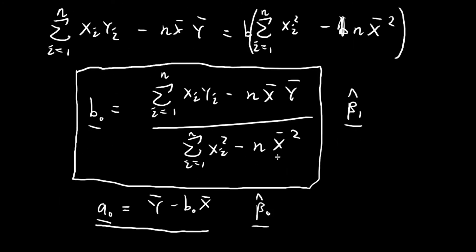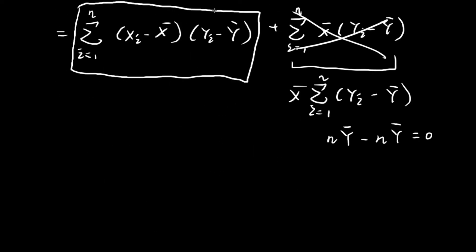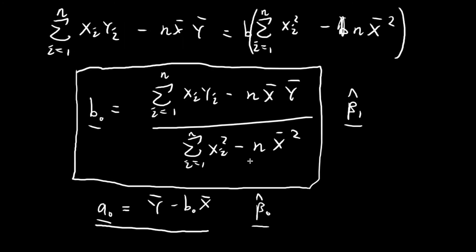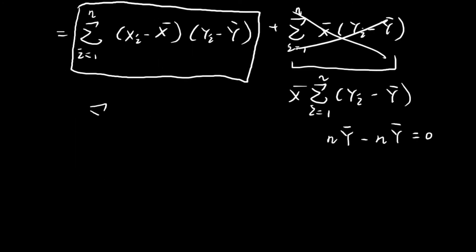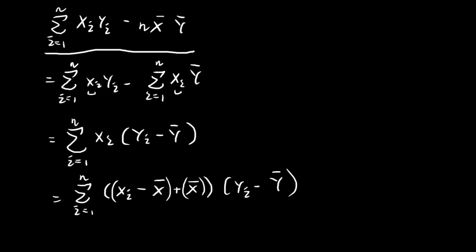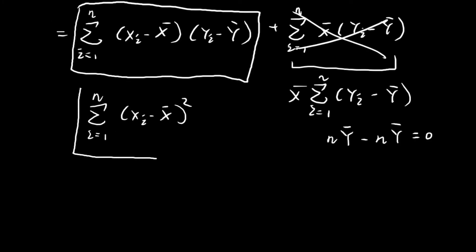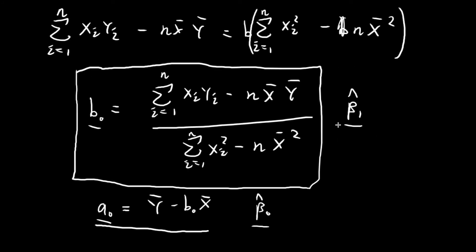The denominator has the exact same structure as the numerator. By the same logic, we can also rearrange the denominator in the same way. You can check this yourself by applying the same method. So once we've rearranged both the numerator and denominator, we can now express B0 — which is also the estimate for beta 1 — in this alternative, nicer-looking form.